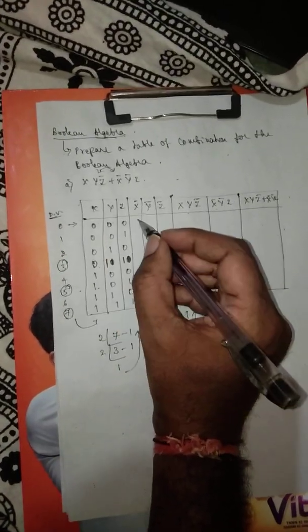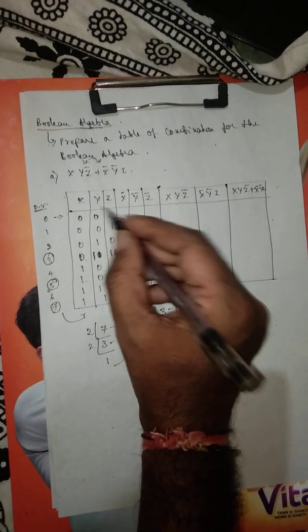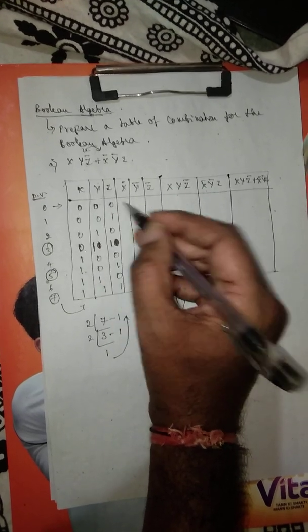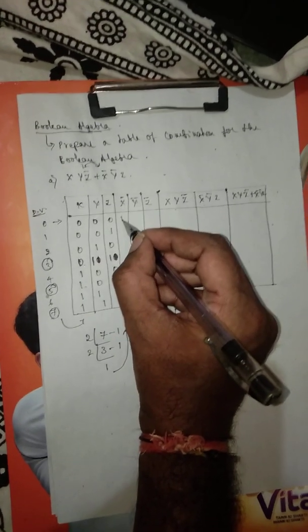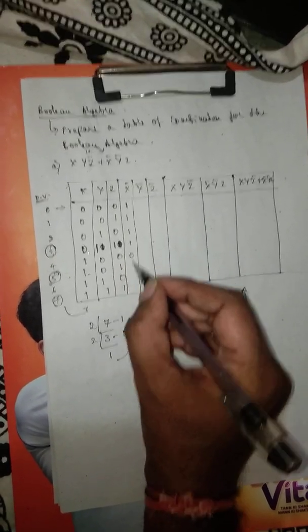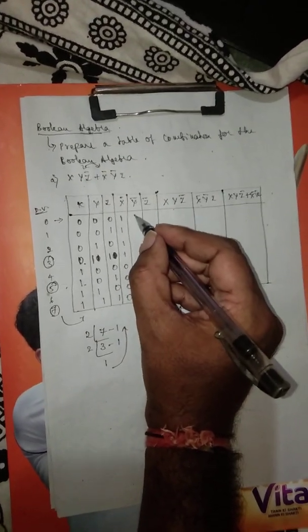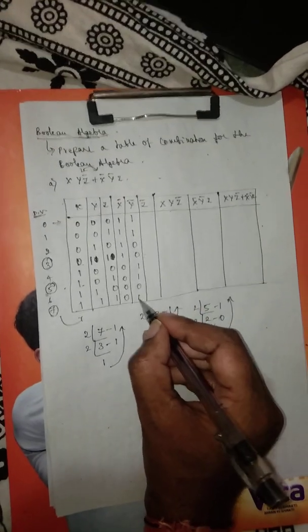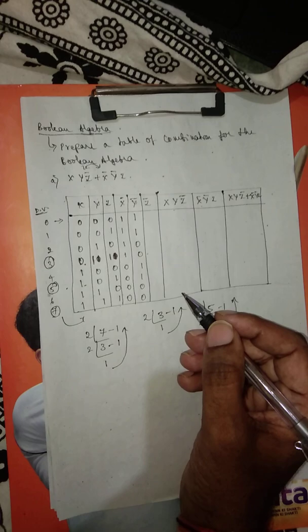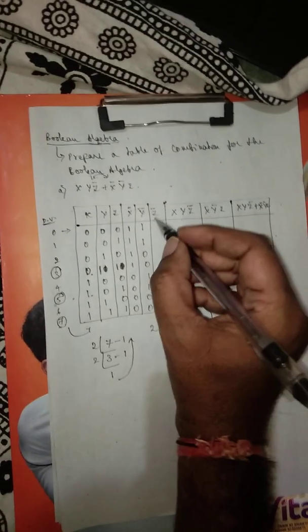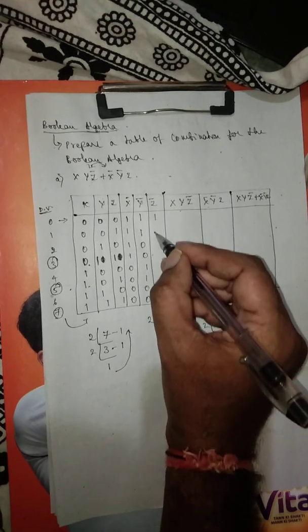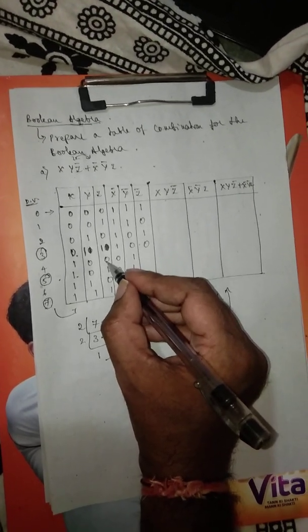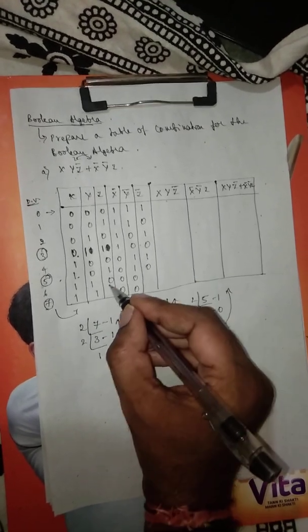Now we write the complement columns. For x bar, we change all values: if it is 0 it becomes 1, and if it is 1 it becomes 0 — so x bar is 1, 1, 1, 1, followed by 0s. For y bar it becomes 1, 1, 0, 0, 1, 1, 0, 0. For z bar it is 1, 0, 1, 0, 1, 0, 1, 0 — so you write the complement for each.